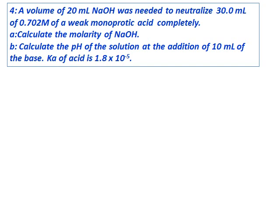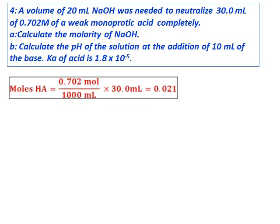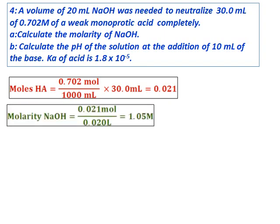A volume of 20 milliliters of sodium hydroxide was needed to neutralize 30 milliliters of 0.702 molar weak monoprotic acid. Calculate the molarity of sodium hydroxide. There is also a part B: calculate the pH of the solution at the addition of 10 milliliters of the base; the Ka of the acid is given. For part A, we calculate the moles of the acid, which comes to 0.021. Since this is a monoprotic acid, moles of acid equals moles of sodium hydroxide, giving a molarity of sodium hydroxide of 1.05 molar.